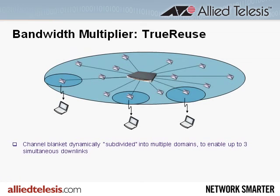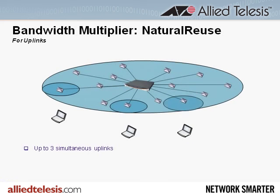In many of today's web-based applications, downlink capacity is of primary importance because users download a lot more data than they upload. Nevertheless, Extracom has also addressed uplink capacity with a feature called NaturalReuse, which enables up to three simultaneous uplinks on a single channel blanket. So with efficient reuse of just one channel, Extracom achieves the same uplink and downlink capacity as the three-channel, nine-AP microcell deployment discussed earlier.